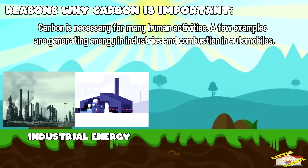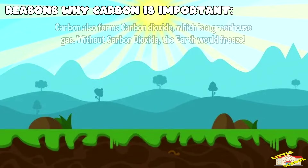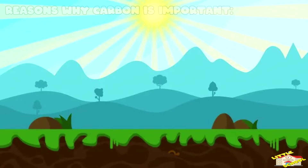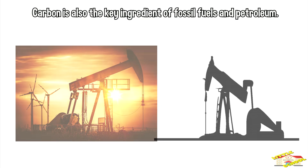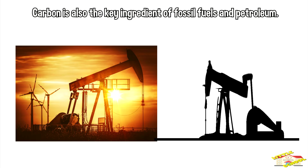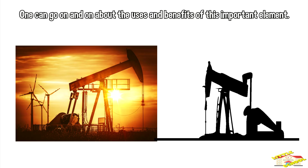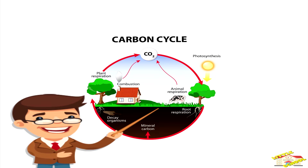Carbon is one of the most stable, versatile, and abundant elements on Earth. It is necessary for many human activities — for example, generating energy in industries, combustion, and automobiles. Carbon also forms carbon dioxide, which is a greenhouse gas. Without carbon dioxide, the Earth would freeze. Humans and animals need carbon for their metabolism in the form of carbohydrates. Carbon is also the key ingredient of fossil fuels and petroleum.